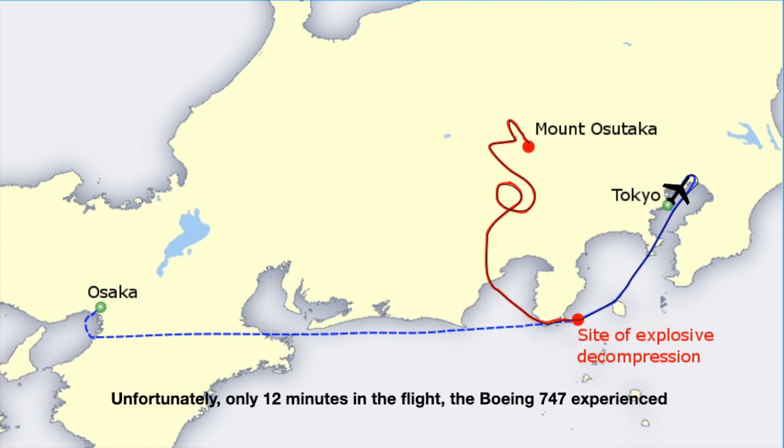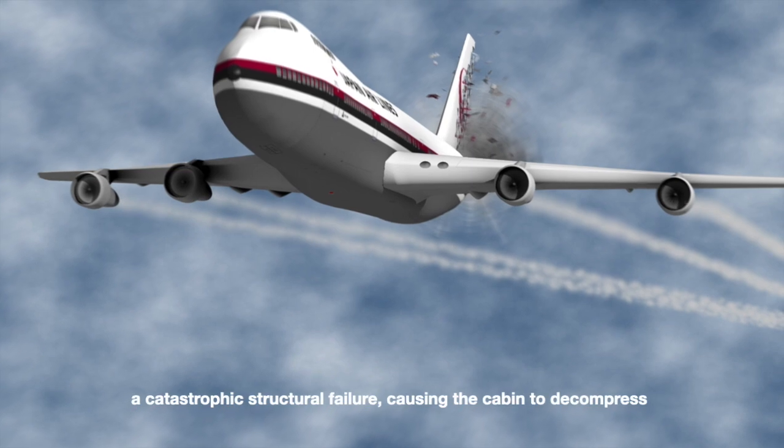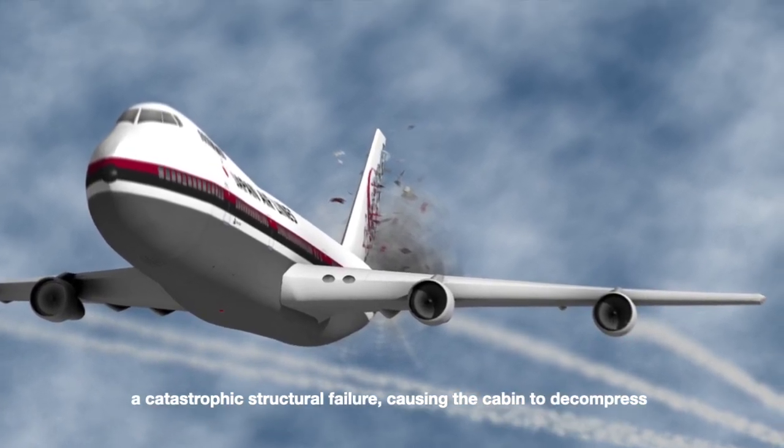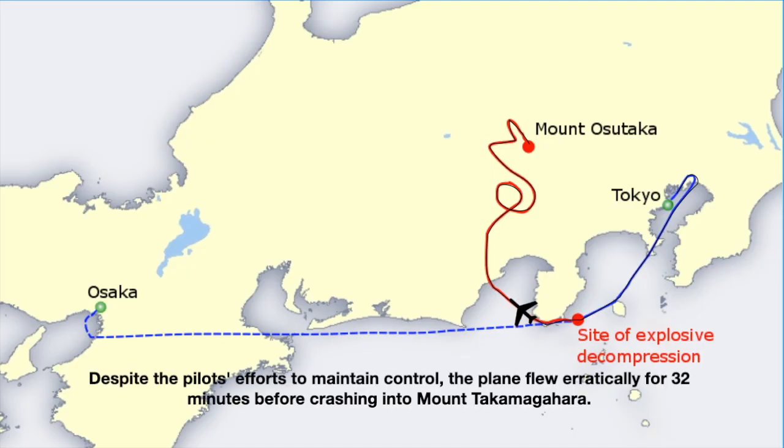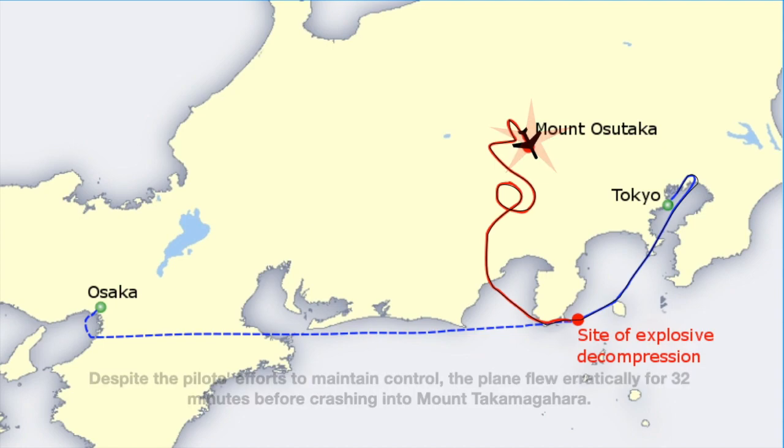Unfortunately, only 12 minutes into the flight, the Boeing 747 experienced a catastrophic structural failure causing the cabin to decompress. Despite the pilot's efforts to maintain control, the plane flew erratically for 32 minutes before crashing into Mount Takamagahara.